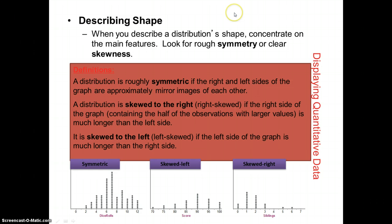So we can describe the shape of the distribution. We can look for the symmetry or the skewness. As you can see, this first plot is symmetrical. It's not skewed either way. This one is skewed to the left. This one is skewed to the right. If you look at this one and consider this to be test scores, these people obviously did much better on this test than these people did right here.